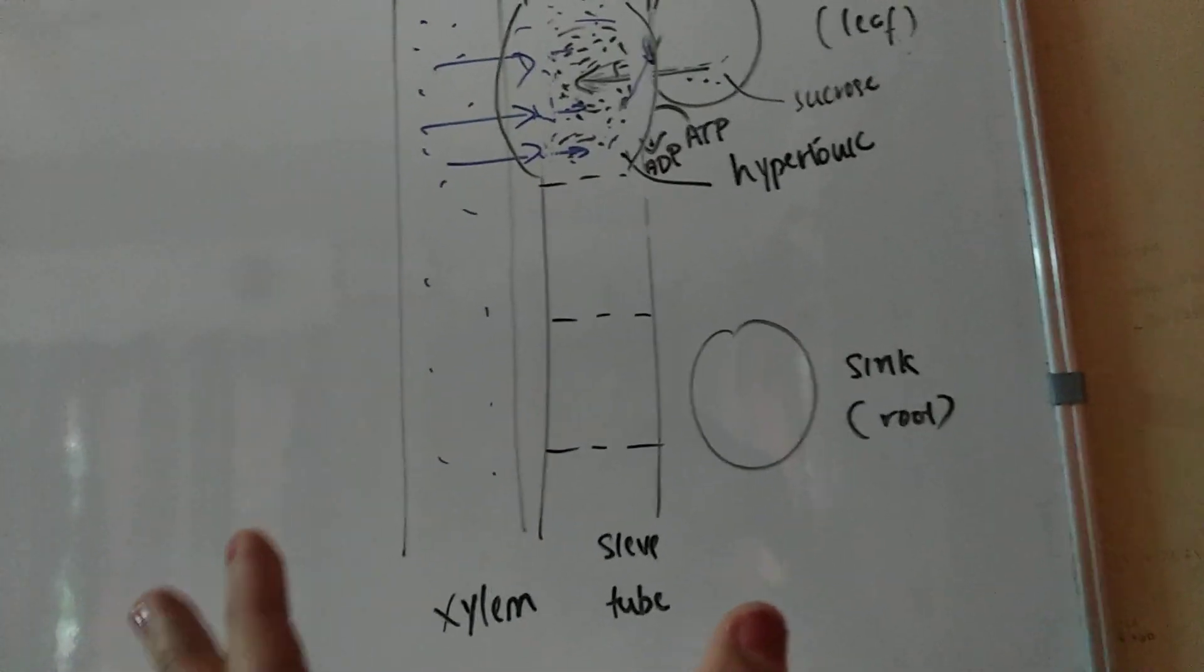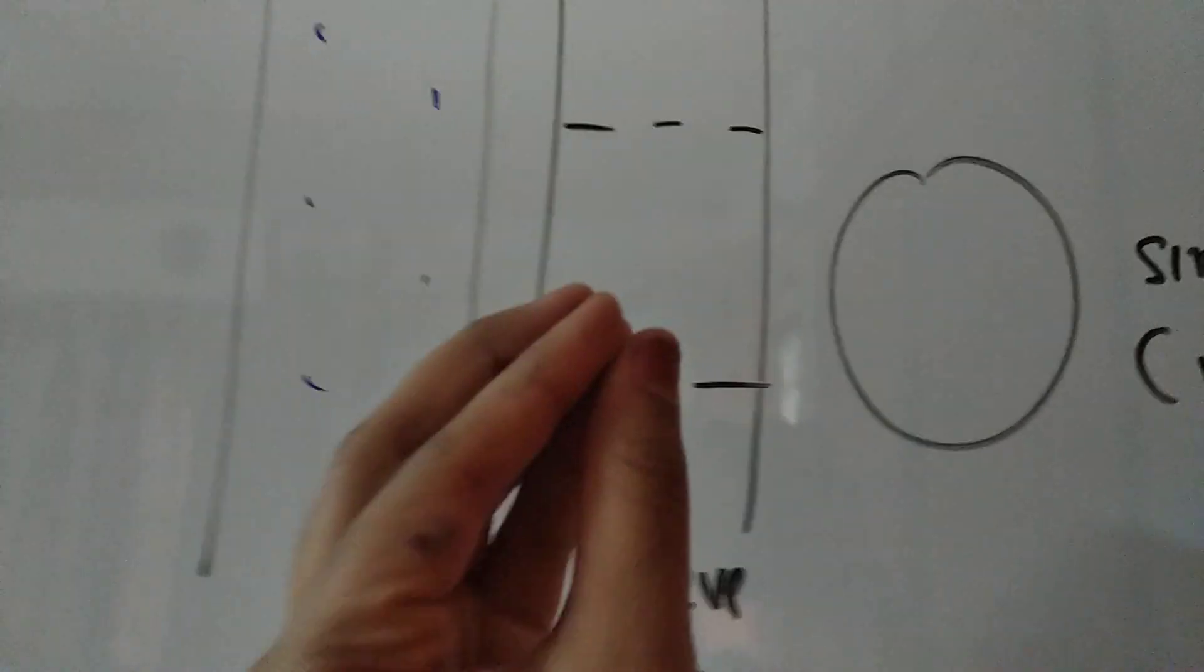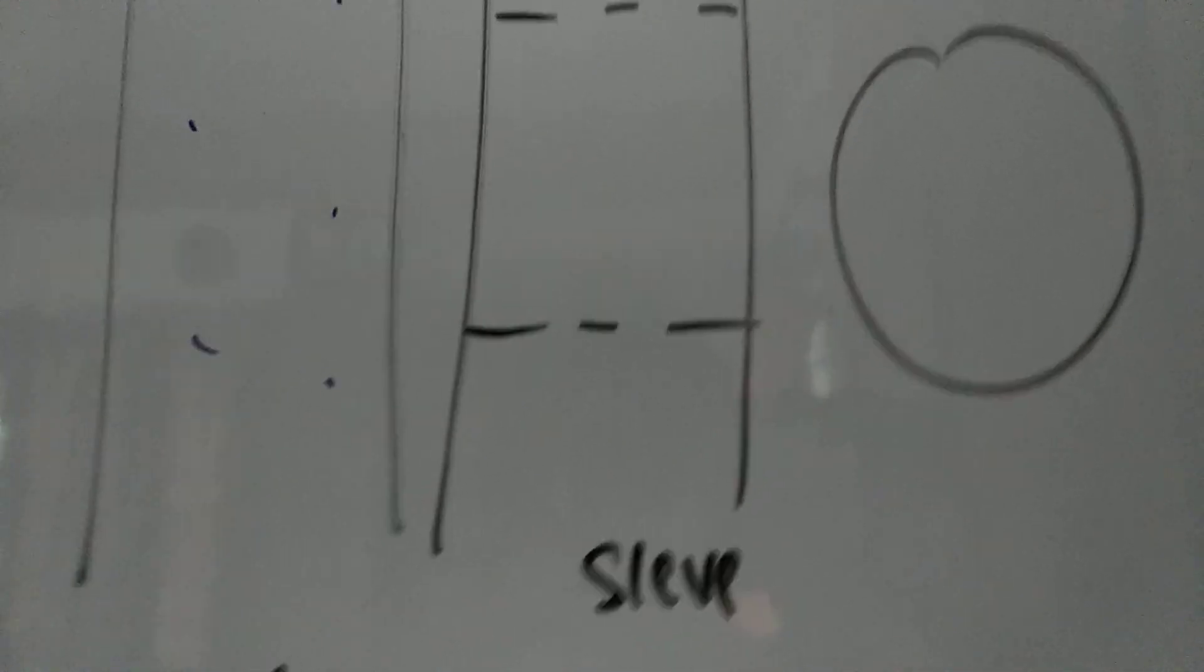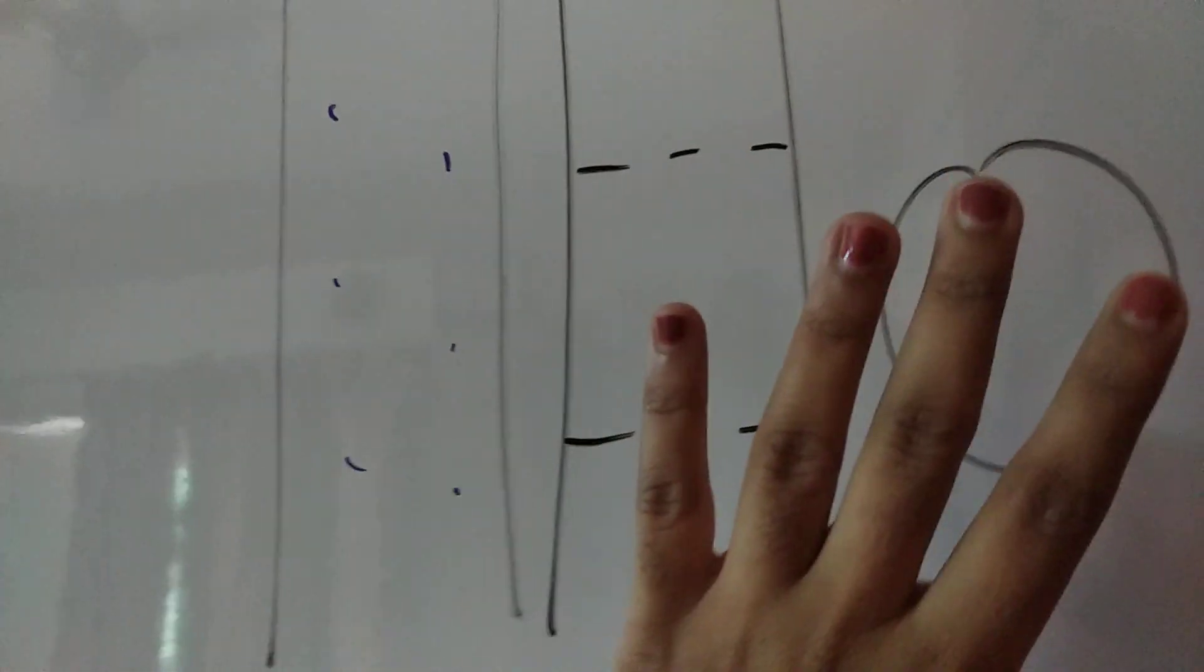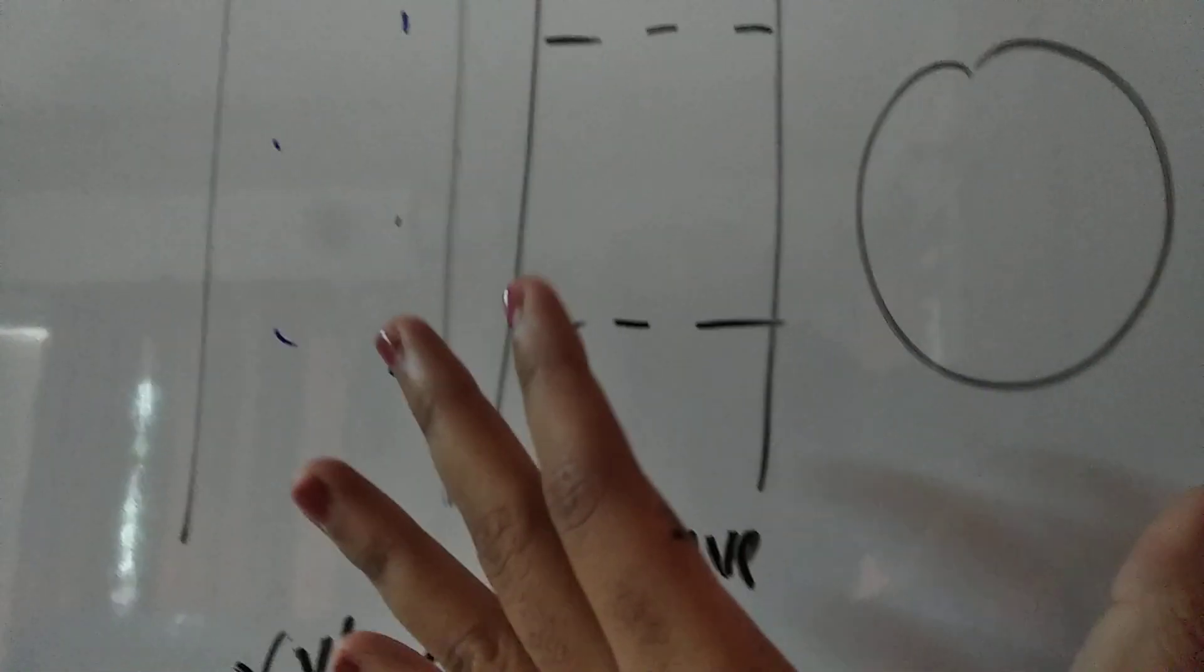Now look at the sink region. The sink region barely has any pressure because it barely has any solutes. It's empty of solutes. There's no water going from the xylem into this part because this is not a hypertonic solution.